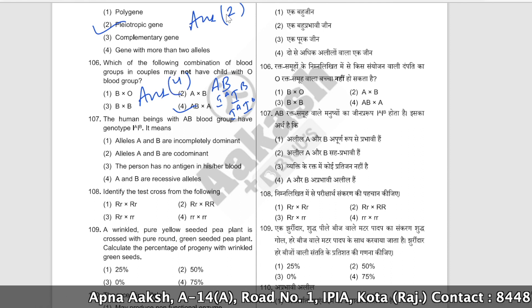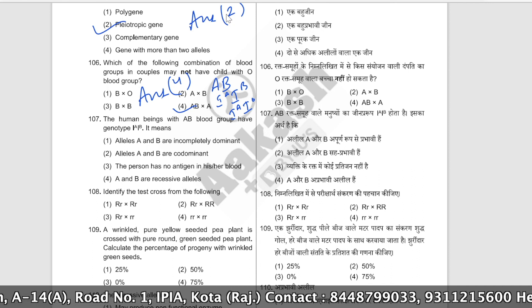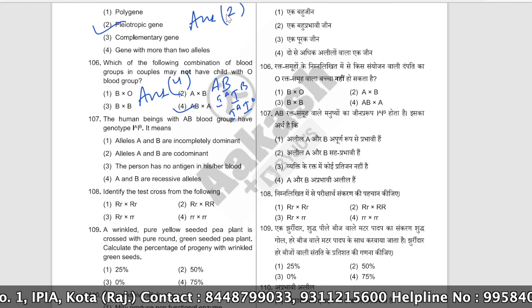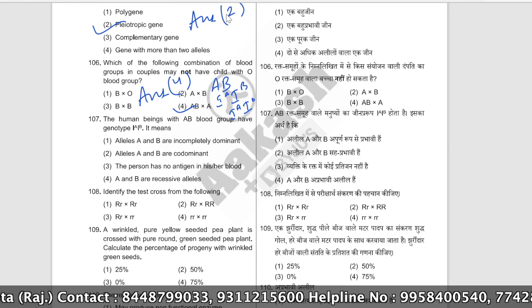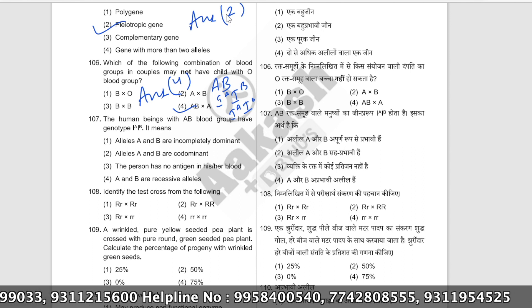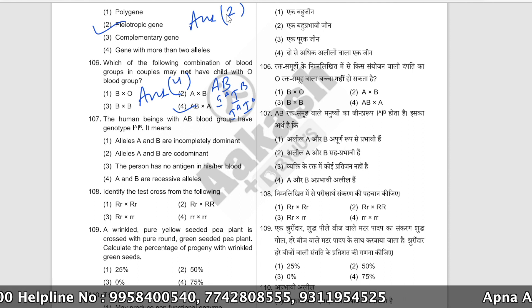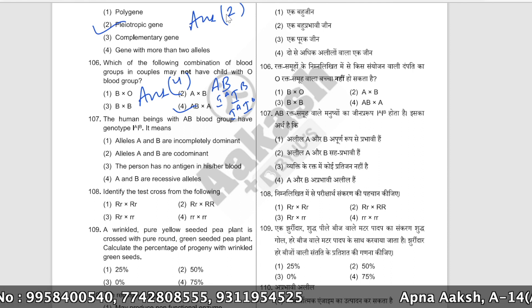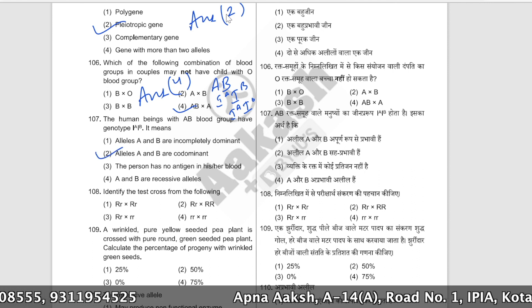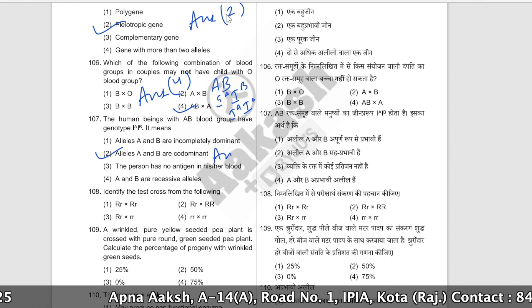In human beings with AB blood group, the genotype is I^A I^B. This means that both alleles — I^A and I^B — are expressed simultaneously. This is an example of co-dominance where both alleles are co-dominant. The correct answer is option number two.